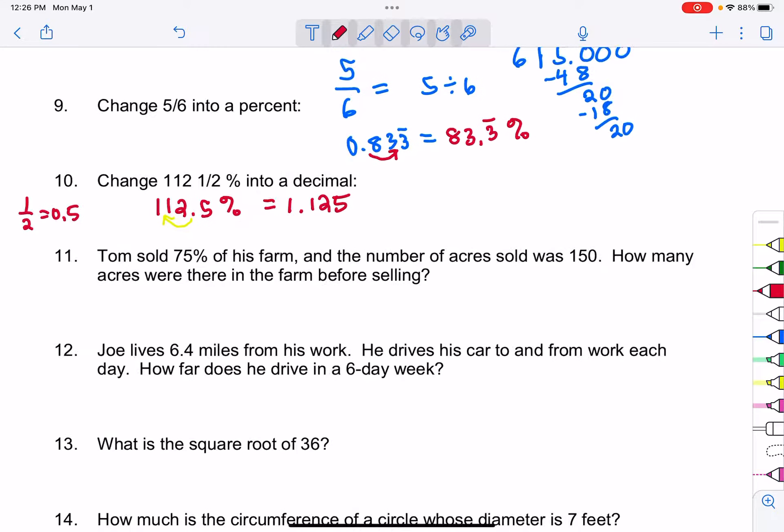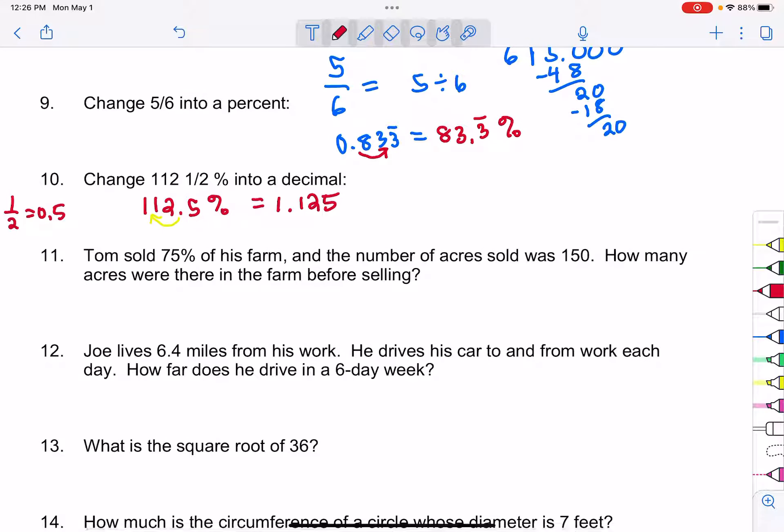Okay, we're going to do 11, 12, and 13 and then we'll continue in another video. Let's take a look at number 11. It says Tom sold 75% of his farm and the number of acres sold was 150. How many acres were there in the farm before selling? So this is the way you want to think about it: 75 percent of the total on the farm gave me an answer of 150. 75 percent of his farm, of the total acres, is 150.